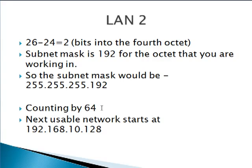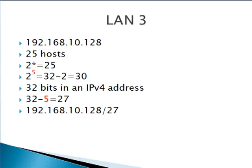We start out with 192.168.10.64 for the beginning of LAN 2's network. The next network will start at 128, because 64 plus 64 is 128. So LAN 3 starts at 192.168.10.128, and you only need 25 hosts.